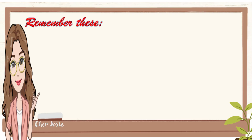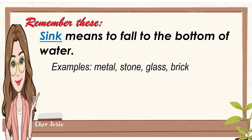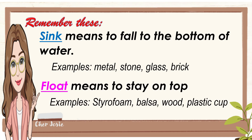Here are the things that we should remember. The word sink means to fall to the bottom of water. Examples are metal, stone, glass, and brick. The word float means to stay on top. Examples are styrofoam, balsa, wood, and plastic cup. An object's shape can affect its ability to float, but some materials float no matter what their shape, just like styrofoam and balsa wood.